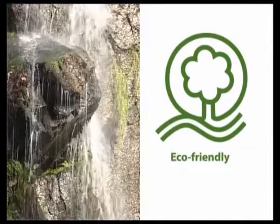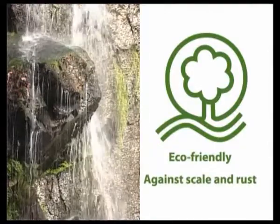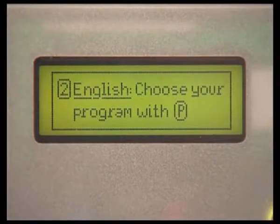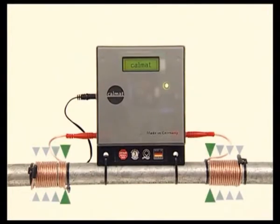CalMAT is your eco-friendly solution against scale and rust. The CalMAT impulse technology prevents scale from blocking your pipes. The intelligent impulses rob scale of its ability to stick to surfaces.